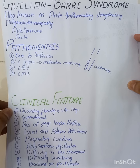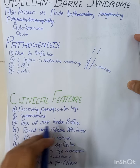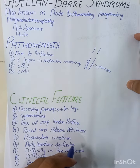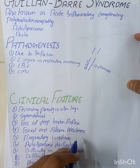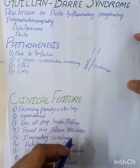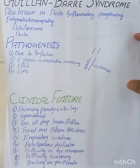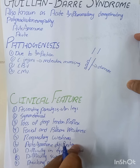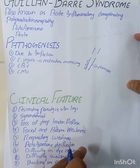There will be facial or bulbar weakness because some cranial nerves that are motor in nature are also involved. Respiratory weakness can also occur and is a life-threatening condition — the patient cannot breathe well and may need to be shifted to the ICU for ventilator support. Autonomic dysfunction may also occur, including orthostatic hypotension.